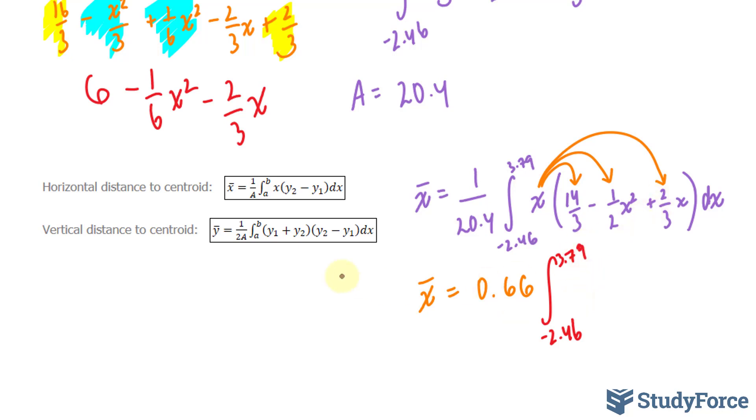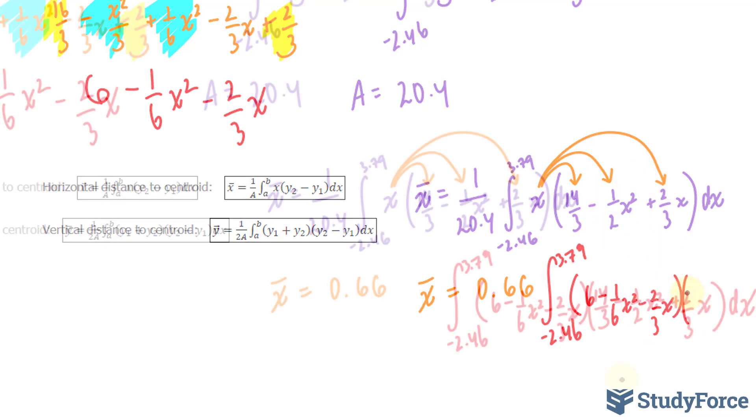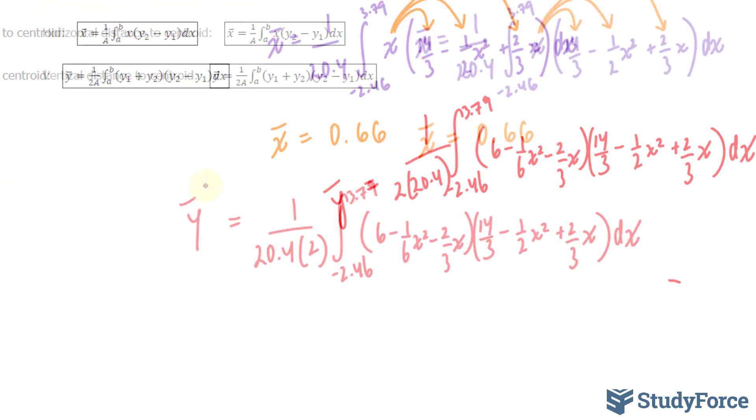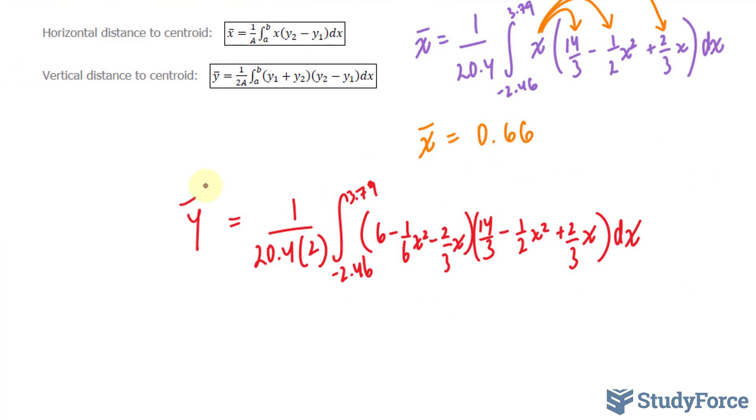We have the integral between negative 2.46 and 3.79. We will take this function times this function. And of course, don't forget the 1 over 2 times 20.4, the area. This will give us y bar. I'll clean this up for you before we continue. Now that we have it organized, the next step is to do this using our calculator, because to do this manually would just take a really long time.